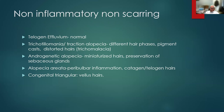We have non-inflammatory, non-scarring alopecia. When we see something with no inflammation and no scars, we think about telogen effluvium, trichotillomania, and traction alopecia — we may see different hair phases, pigment casts, and distorted hairs. Also androgenetic alopecia, where we just see miniaturized hairs but preservation of the sebaceous gland. Alopecia areata in the later stages is no longer really that inflammatory — we just see miniaturized telogen hairs. And congenital triangular alopecia — pretty rare, I've only seen one case — where all you see is vellus hairs.